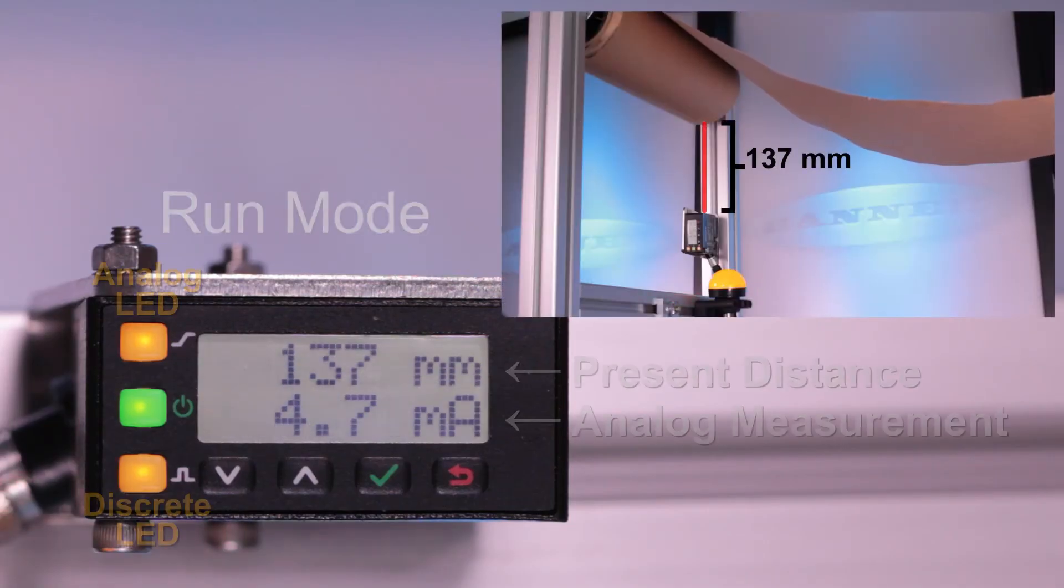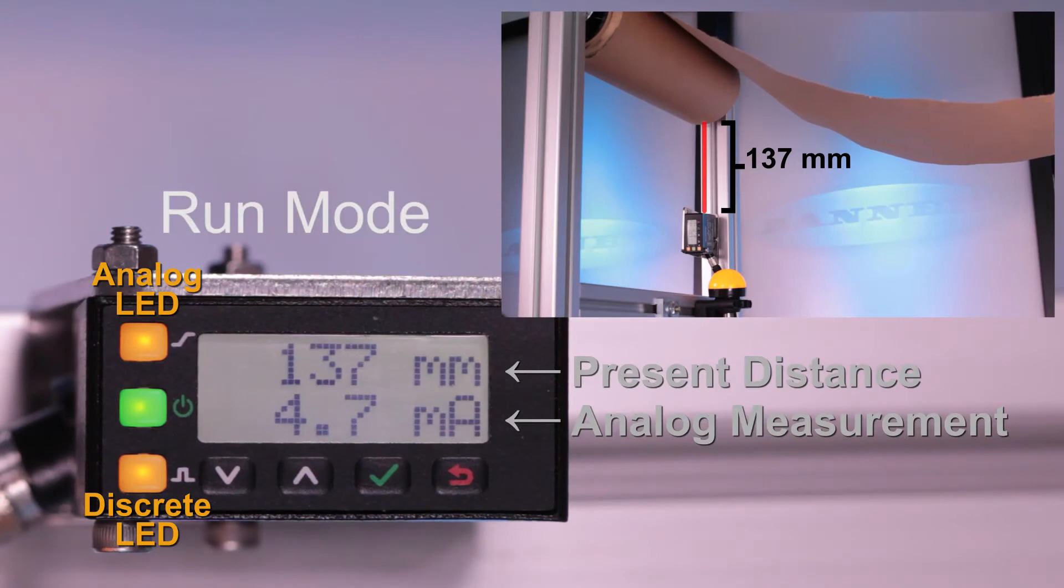When first powered on, the LE begins in Run mode, displaying the present distance and analog measurement.